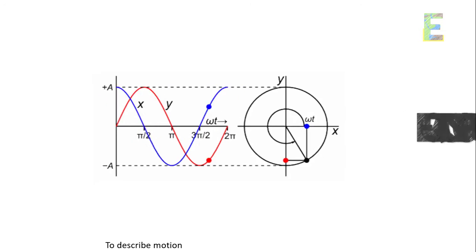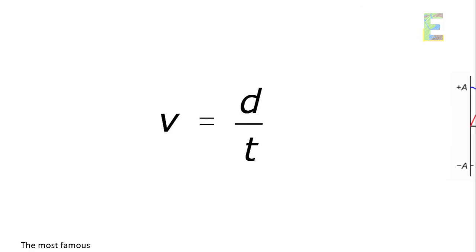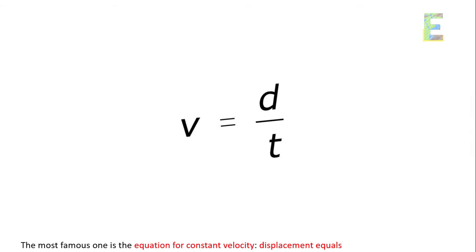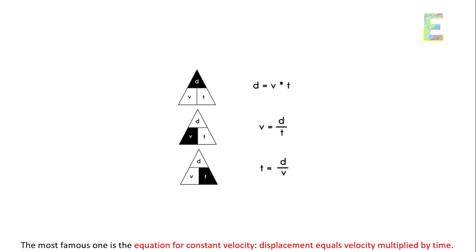Equations of motion. To describe motion mathematically, we use equations of motion. The most famous one is the equation for constant velocity: displacement equals velocity multiplied by time.